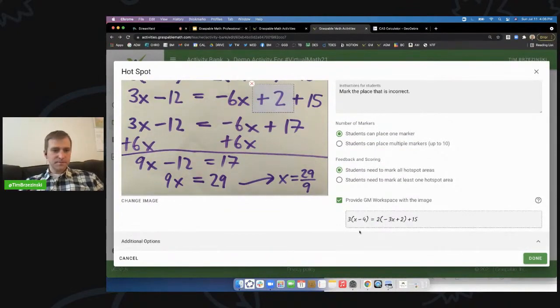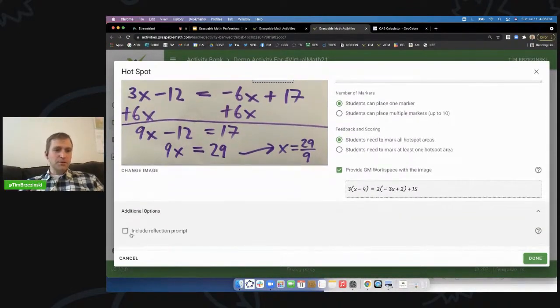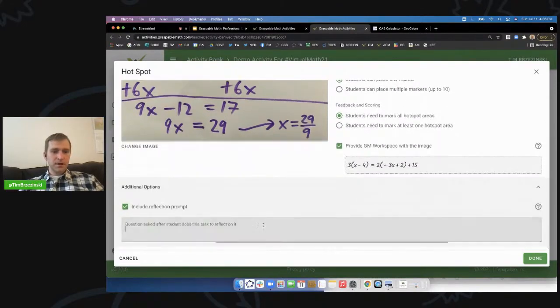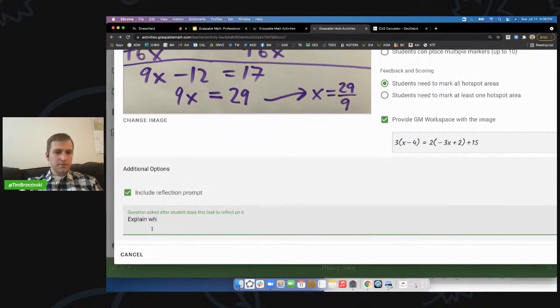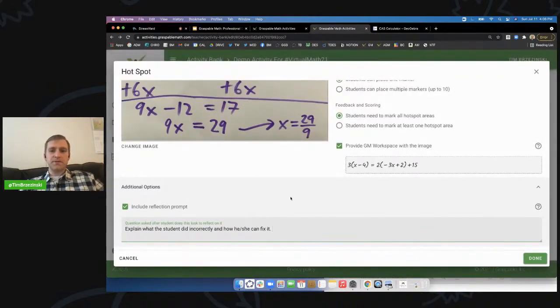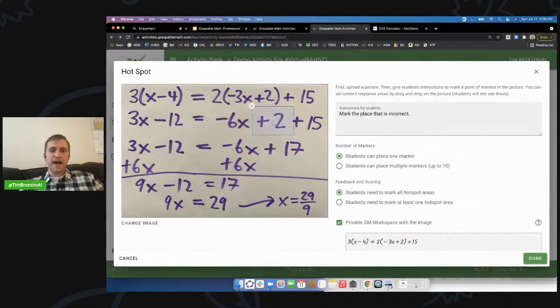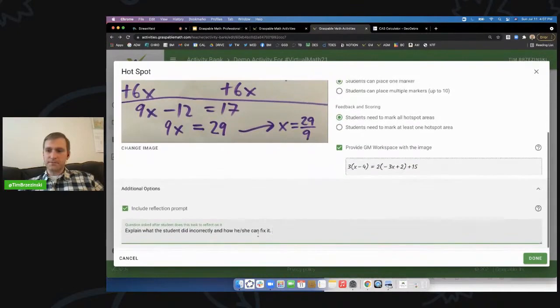Now look at the additional options. Do you want to include a reflection prompt? I say, heck yeah, I do. And this is where I said, explain what the student did incorrectly and how he or she can fix it. Again, this part's not really graded so much. What Graspable Math is only going to give you the green feedback if the dot is over the two, I think we all know that, but I like to read students' thoughts and comments there. And I was able to see it on my dashboard before. So I'll hit done.